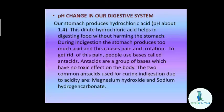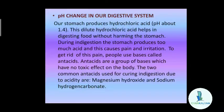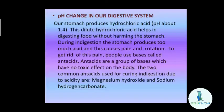The next important topic is pH change in our digestive system — how the pH of gastric juices in the stomach is important in the process of digestion. Our stomach produces hydrochloric acid whose pH is about 1.4. This dilute hydrochloric acid helps in digesting our food without harming the stomach.